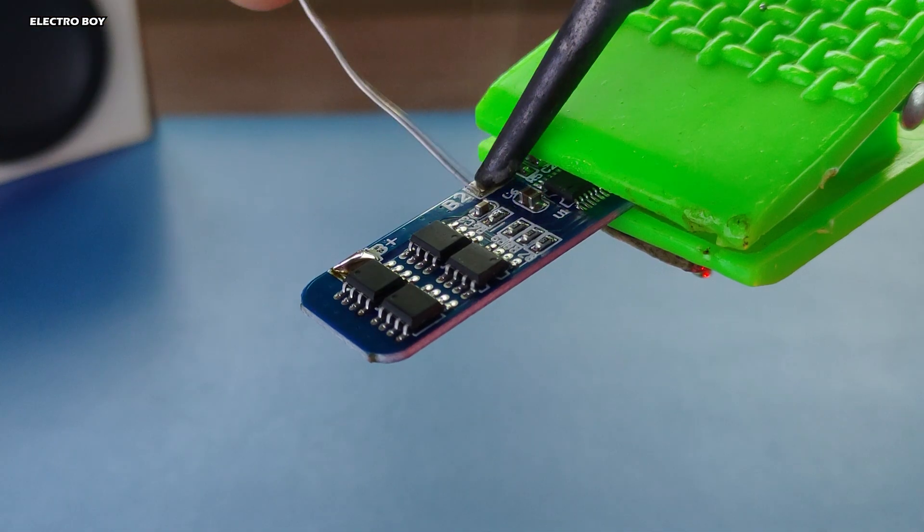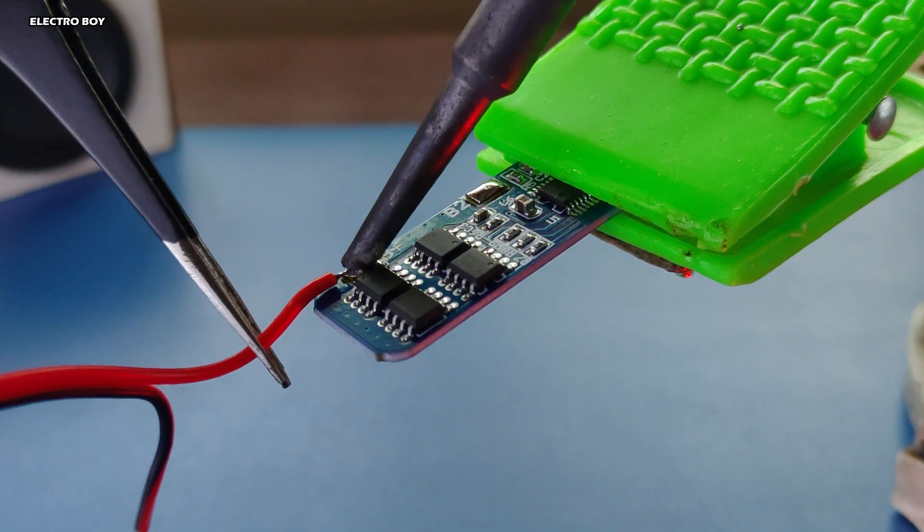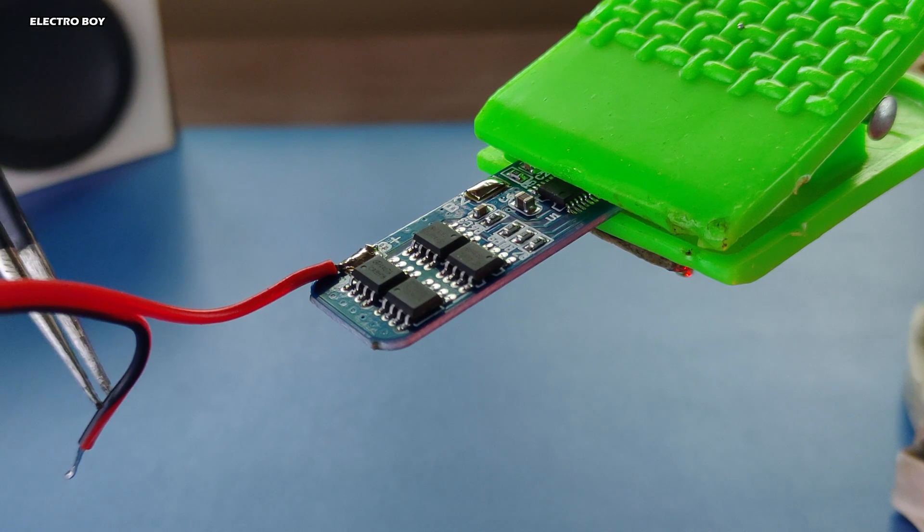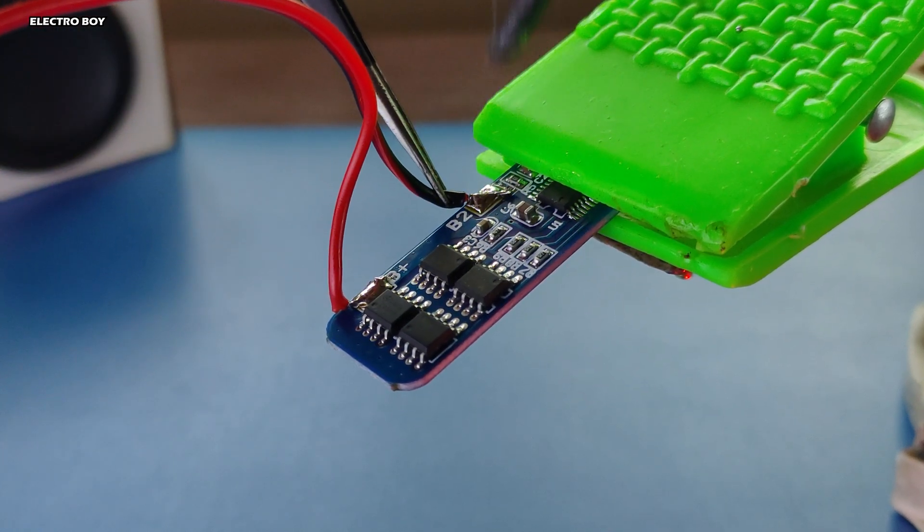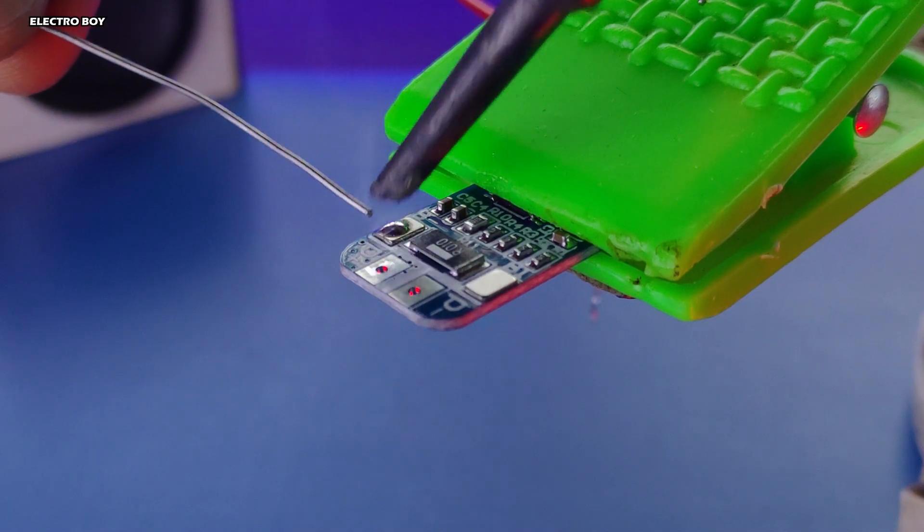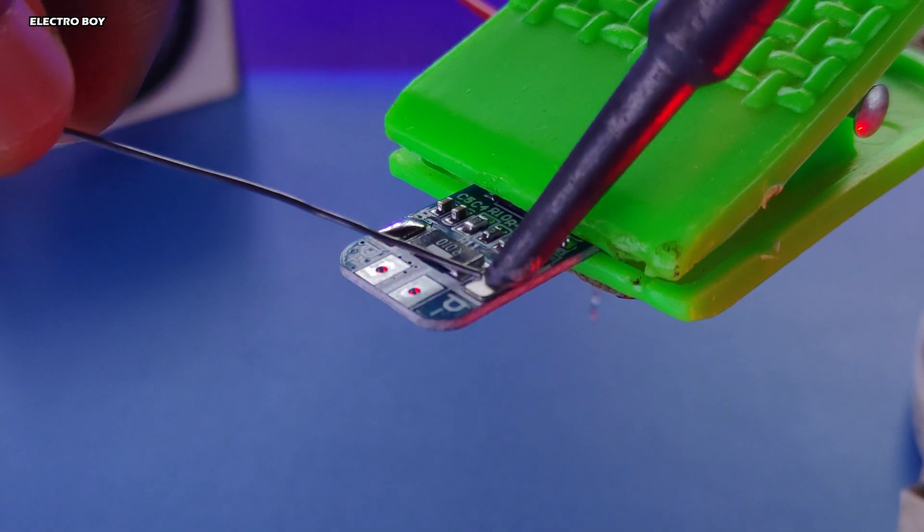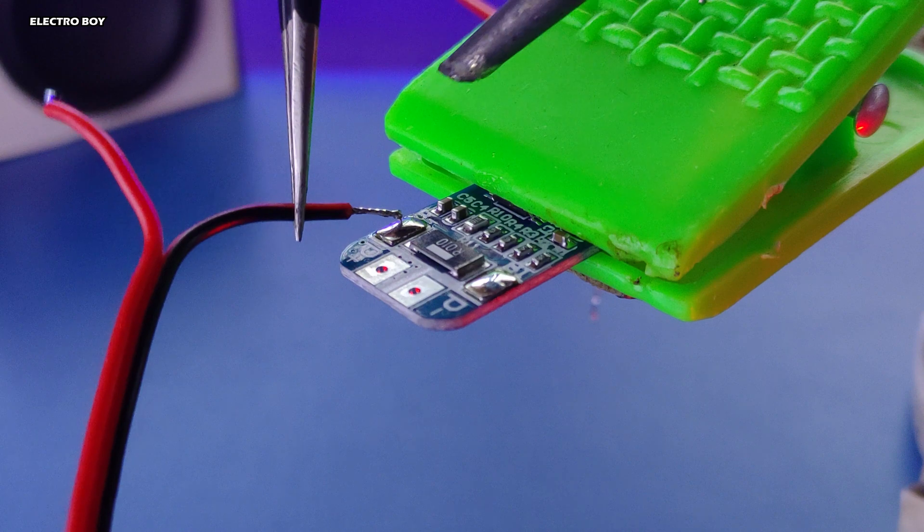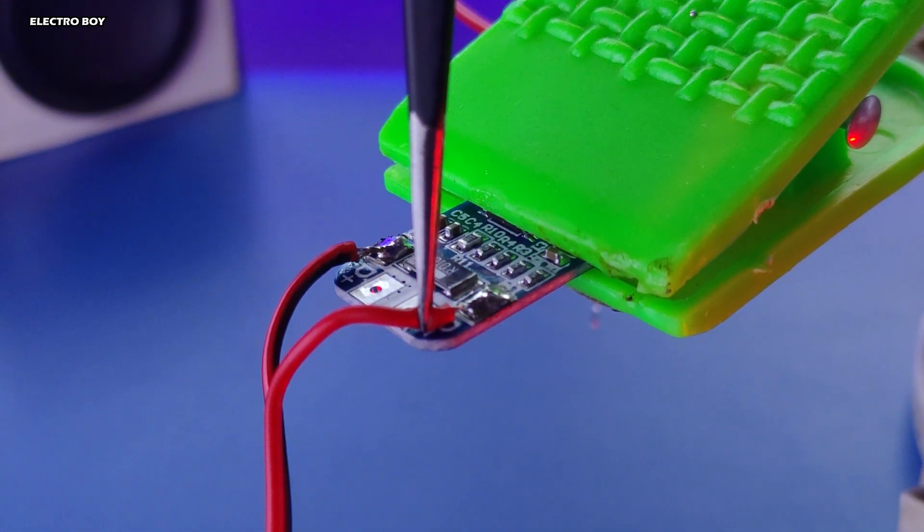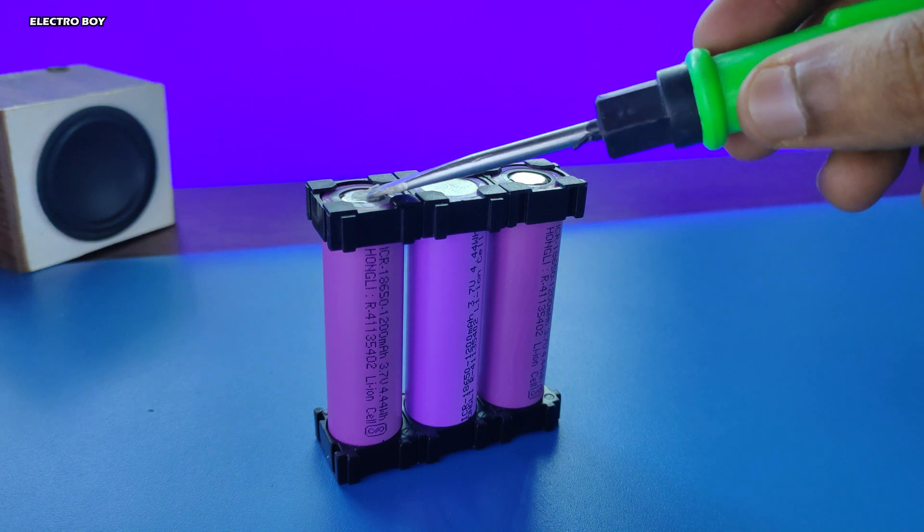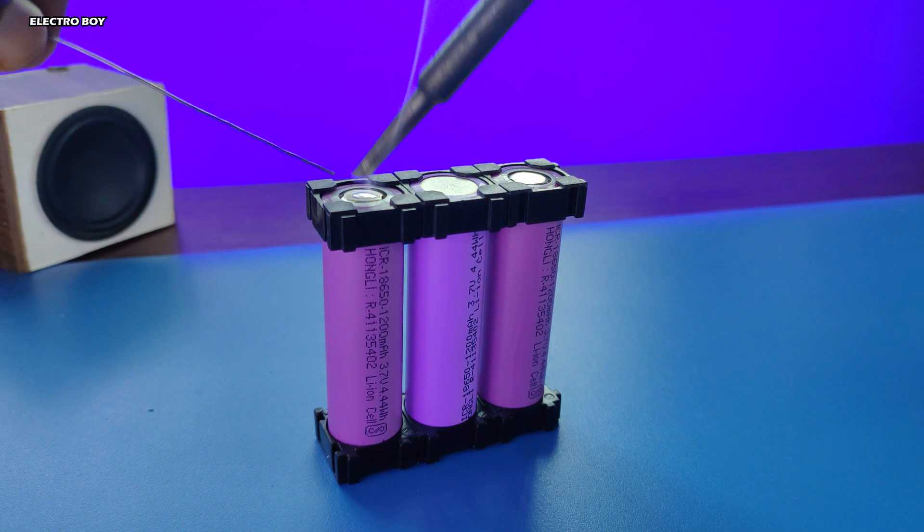First, I will be soldering some wires onto the BMS. All the 18650 cells need to be connected in series first.